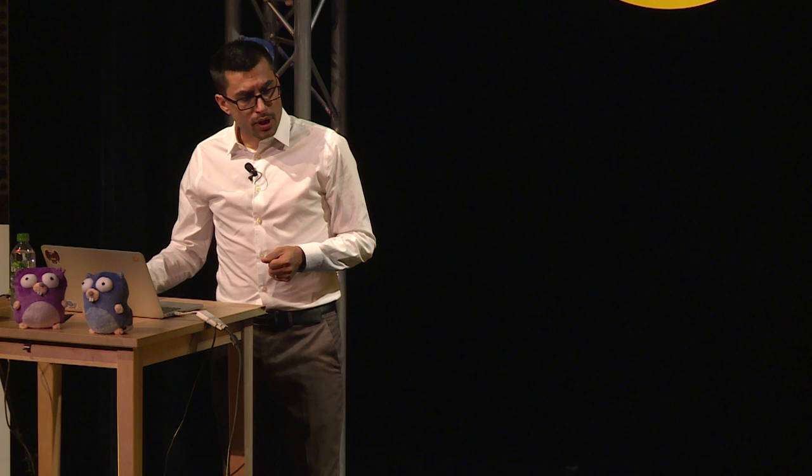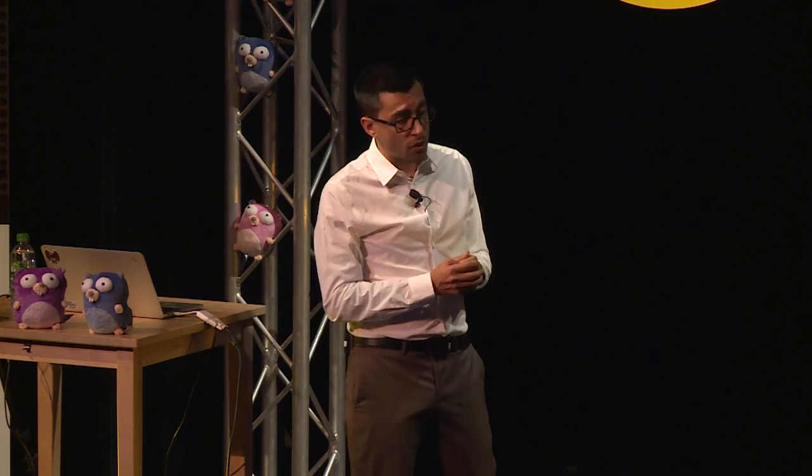You might be wondering what the code for busy and not busy looks like. It's checking the state and returning a boolean. If you've done C++ or Java you'll recognize the use of mutexes — it's not the greatest code but it is thread safe.